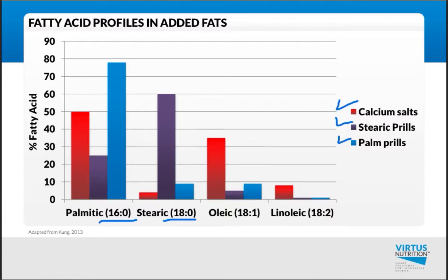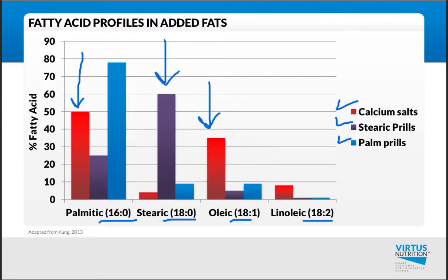When we start looking at the unsaturated fatty acids, we have implications for rumen fermentation. Calcium salts are based on about 50% palmitic acid, a saturated fatty acid, and about 35% oleic acid. As a calcium salt, the oleic acid is less available to the rumen, increasing rumen inertness and increasing bypass, so we end up delivering more grams of 18:1 to the small intestine. The stearic prills are based on higher stearic acid with some palmitic and a little 18:1. The palmitic prills are shifted mainly toward palmitic 16:0, with a little 18:0 and a little 18:1, shifting more to having one fatty acid versus multiple.